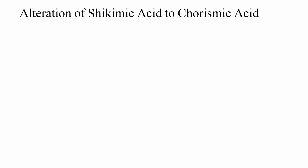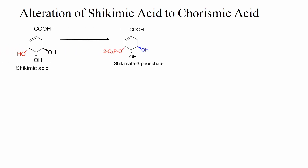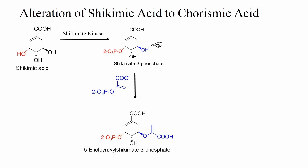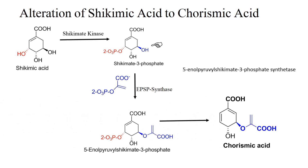Now, alteration of Shikimic Acid to Chorismic Acid. The alteration begins with phosphorylation at the 3-carbon position to give shikimate 3-phosphate. This phosphorylation occurs in the presence of an enzyme called shikimate kinase. Phosphorylation is followed by esterification at the fifth carbon to give a compound called 5-enolpyruvylshikimate 3-phosphate (EPSP). This esterification occurs in the presence of an enzyme called EPSP synthetase. Then, EPSP is converted to chorismic acid in the presence of an enzyme called chorismate synthetase.